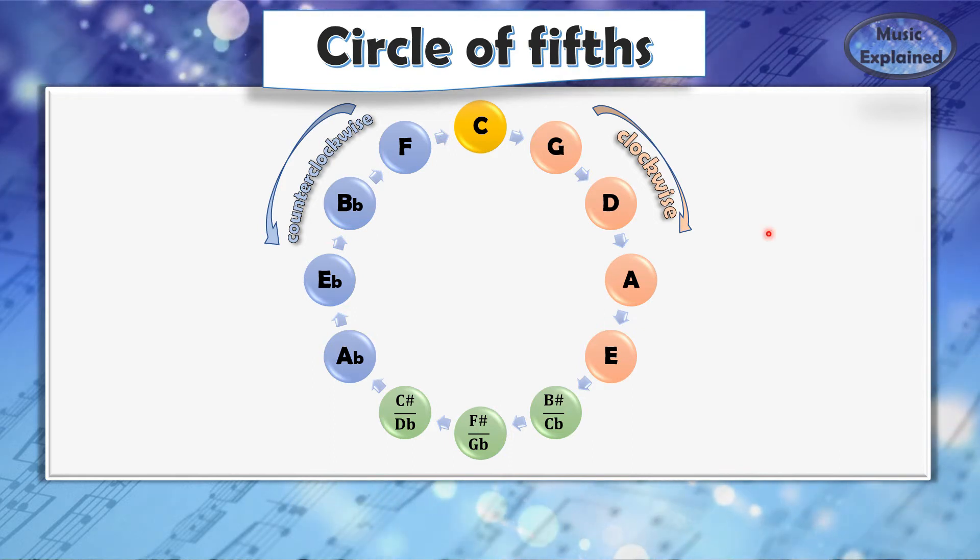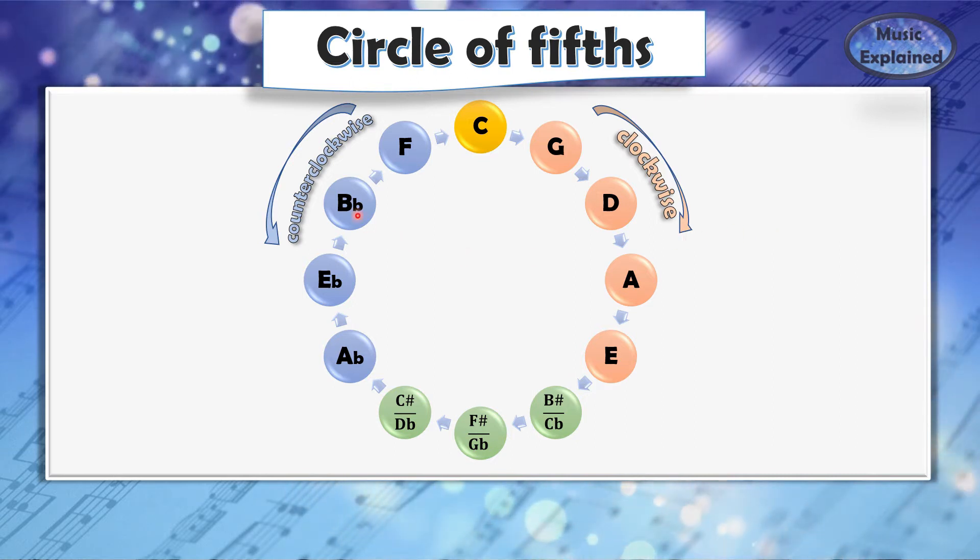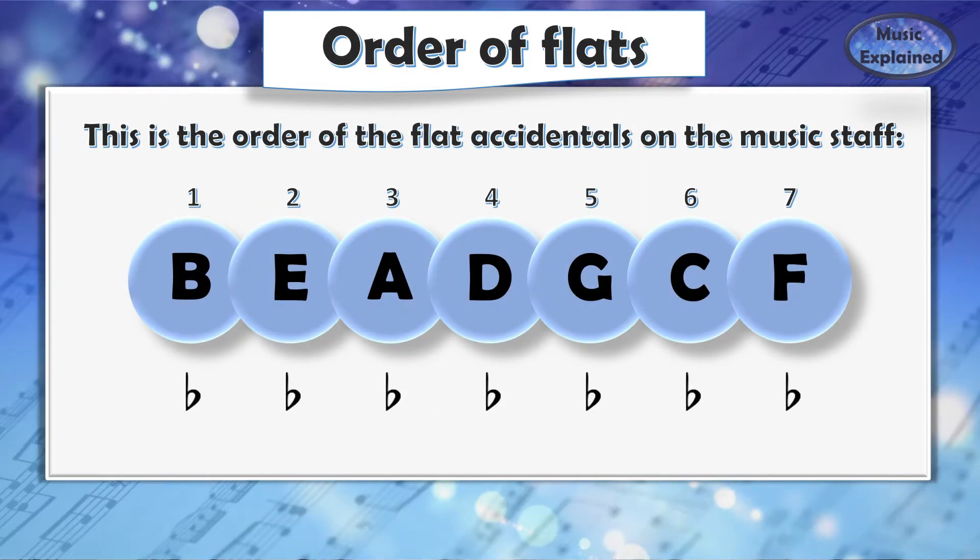The first flat on the music staff is B-flat. If we move counterclockwise from B-flat, we get the exact order of all the flat accidentals on the music staff.